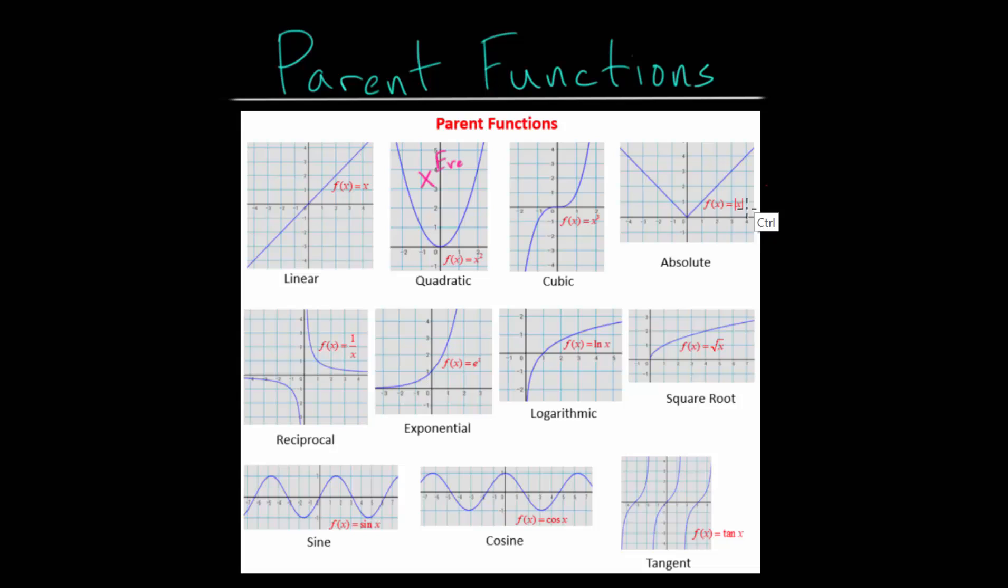Then we have the absolute value function which is very similar to our linear function. Remember this is just the equation y equals x here. That's the most basic linear function. And when we put the absolute value bars around this, essentially every negative value will become positive. So when we put in let's say negative 2, this is essentially asking what the distance negative 2 is from 0, and that is positive 2. So at negative 2 we get a y value of 2. So we end up getting this cone shape figure here.